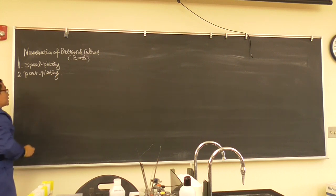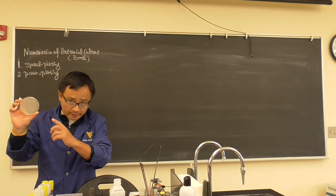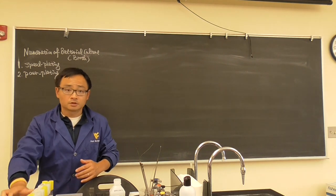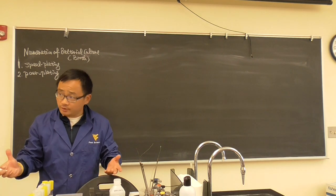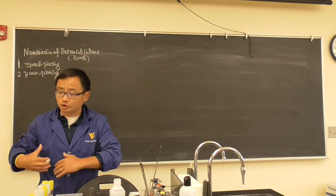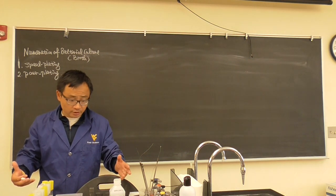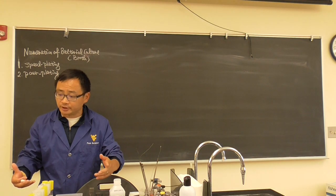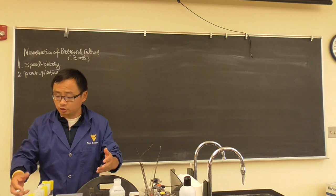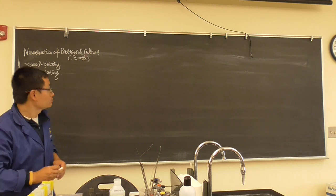The difference between spread plating and pour plating: with spread plating, the agar is already made, you add bacteria and use a spreader. With pour plating, the agar media has not been made yet — you add bacteria and agar media at the same time, and when it solidifies after incubation you see the colonies. Spread plating needs an extra day to prepare agar; pour plating can be done the same day.